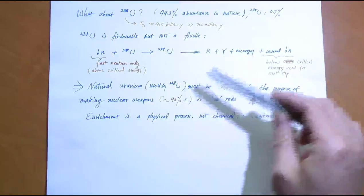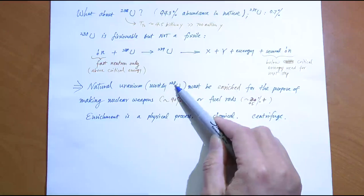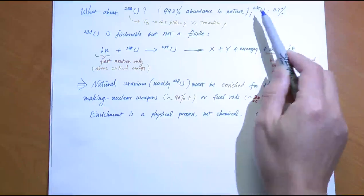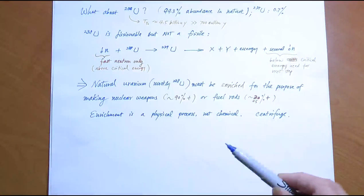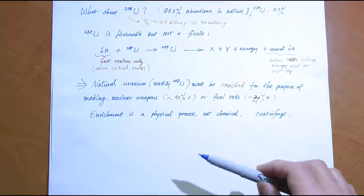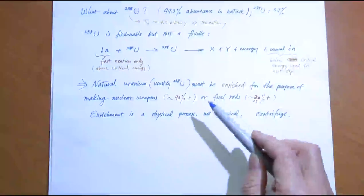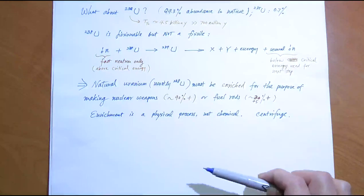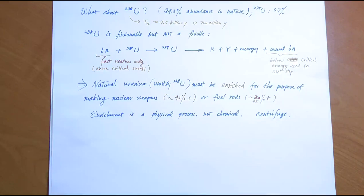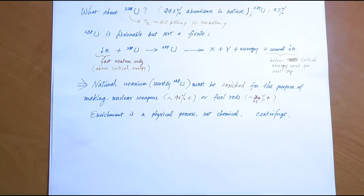To enrich uranium, you first convert it into a gas, then spin it in a centrifuge. The slightly more massive U-238 tends to move outward; the less massive U-235 concentrates near the center. After multiple stages in a large facility, you can obtain enriched U-235. Getting above 90% concentration gives you the raw material for an atomic bomb. This is the most difficult part of building an atomic bomb — and thankfully so, since it means terrorist groups do not yet have the means to do it.